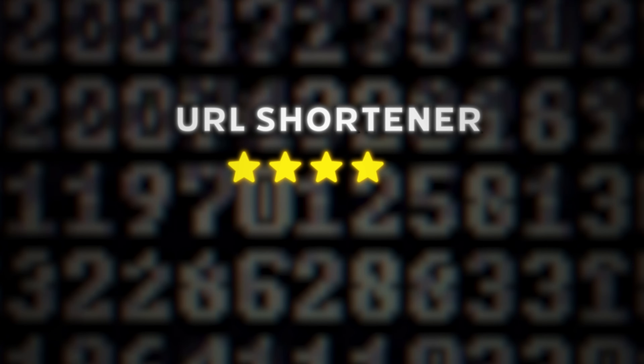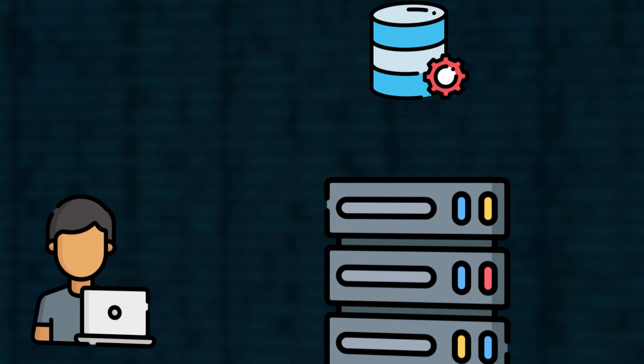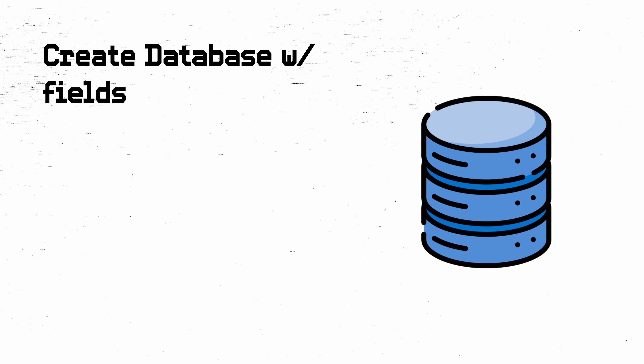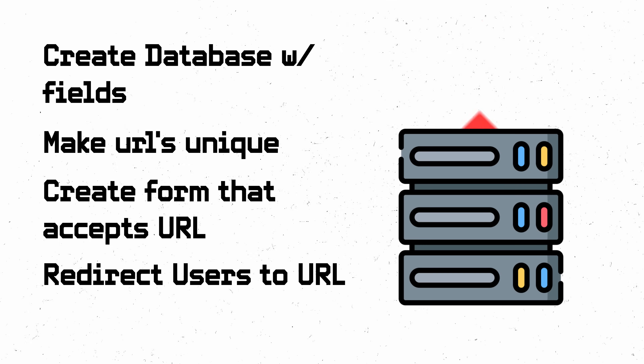URL shortener. You know when you have a long URL and paste it somewhere and it just takes up space? URL shorteners are a great way to deal with this. You store the URL in a database and have a unique code associated with it. When someone goes to that link, redirect them to the actual URL. I rated this a four out of five because of all the different technologies you might need. Breakdown: create a database with fields like short URL and actual URL, find a way to create a unique value for each short URL, create a form that accepts the URL, and find a way to redirect users from your backend to the intended URL.